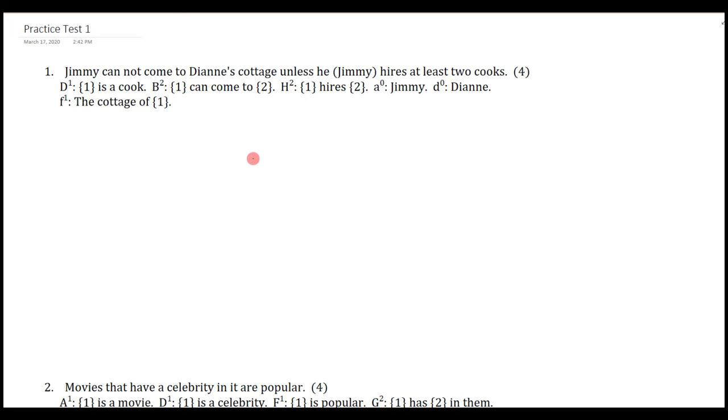Jimmy cannot come to Diane's cottage unless he, who is Jimmy, hires at least two cooks. So whenever you see something like this, Diane's cottage, this is some sort of reference to a combination of operations. So we can quickly just replace that. So the cottage of Diane, so that's just F of D. Jimmy is just A, so wherever you see Jimmy, that's just A. At least two cooks, so cannot come to Diane's cottage.